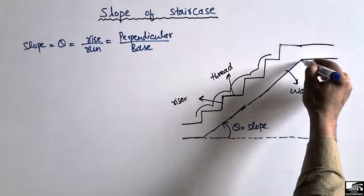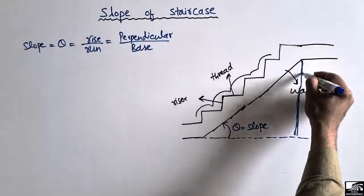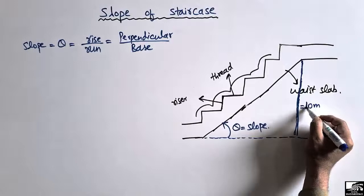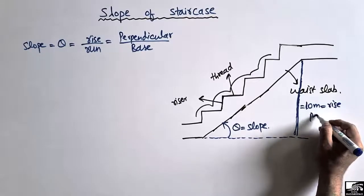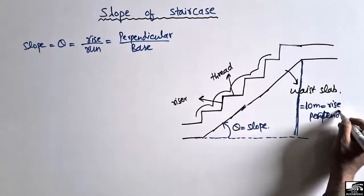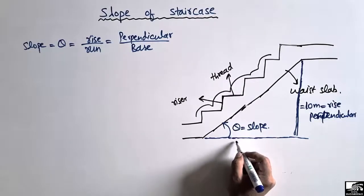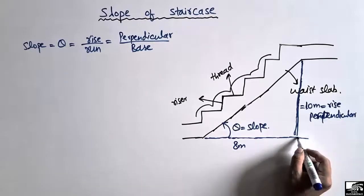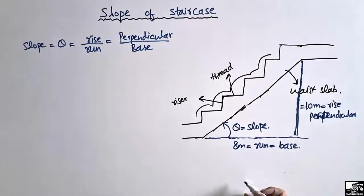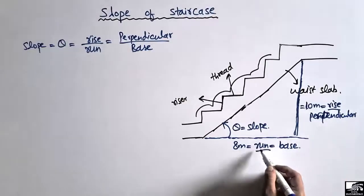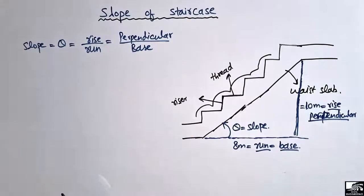If we measure with a tape, the vertical distance of the staircase — let's suppose this vertical distance is 10 meters — this vertical distance is known as the rise, or the perpendicular. The horizontal distance, if we measure with the tape — let's suppose we find out this horizontal distance is 8 meters — this horizontal distance is called the run, or the base of the staircase. Dividing the rise by the run gives us the slope of the staircase.